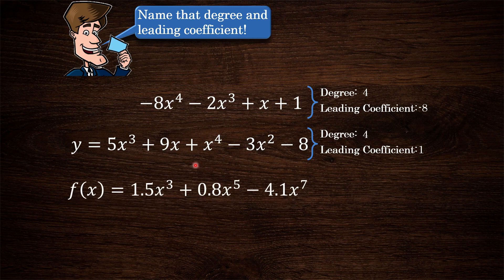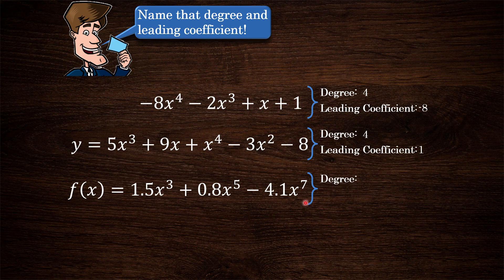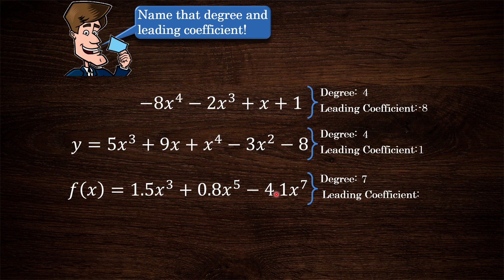Last but not least, we have another polynomial function: 1.5x cubed plus 0.8x to the 5 minus 4.1x to the 7. What is the degree? That's the highest exponent on x, and we see right here that it is 7. The leading coefficient is going to be the coefficient of that x to the 7 term, which is negative 4.1. Remember, subtracting 4.1x to the 7 is the same as adding negative 4.1x to the 7. So our leading coefficient is negative 4.1.